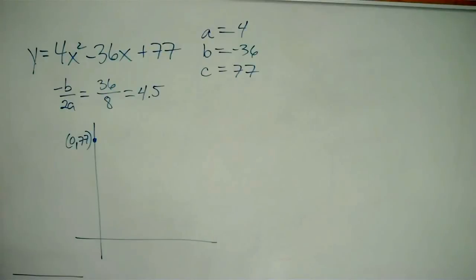And I know my parabola intersects the y-axis at the point 0, 77. I know that, because if I plug 0 in for x, I get 0 minus 0 plus 77 equals y. So I know that my y-intercept must be the point 0, 77.